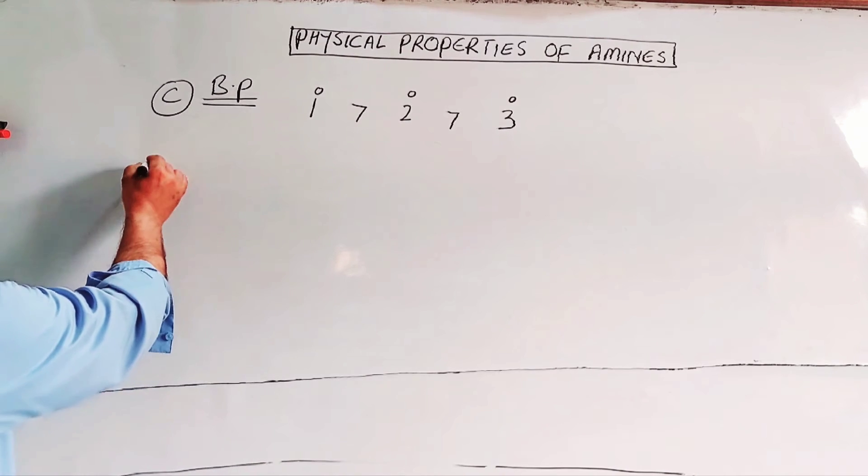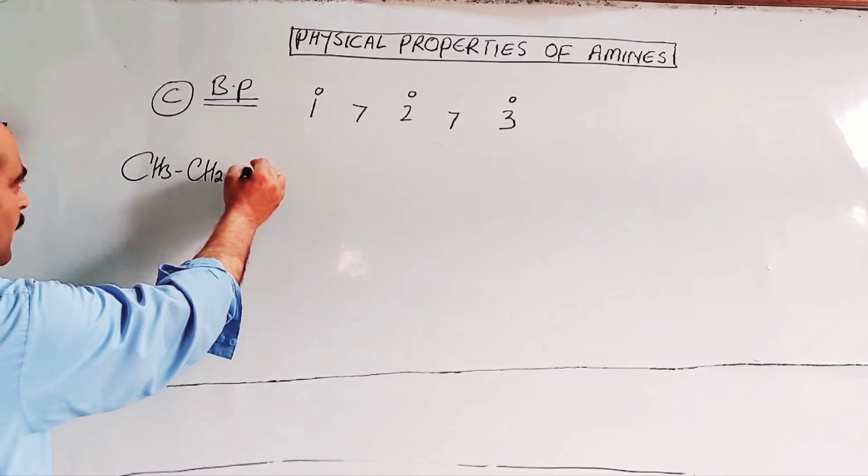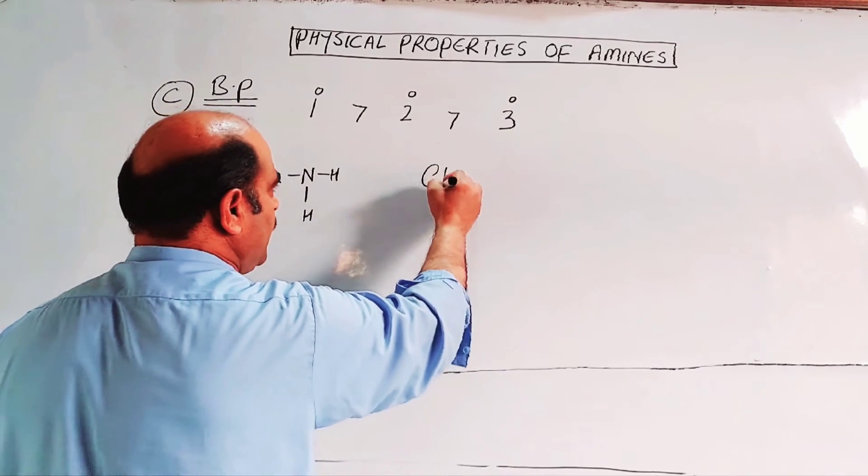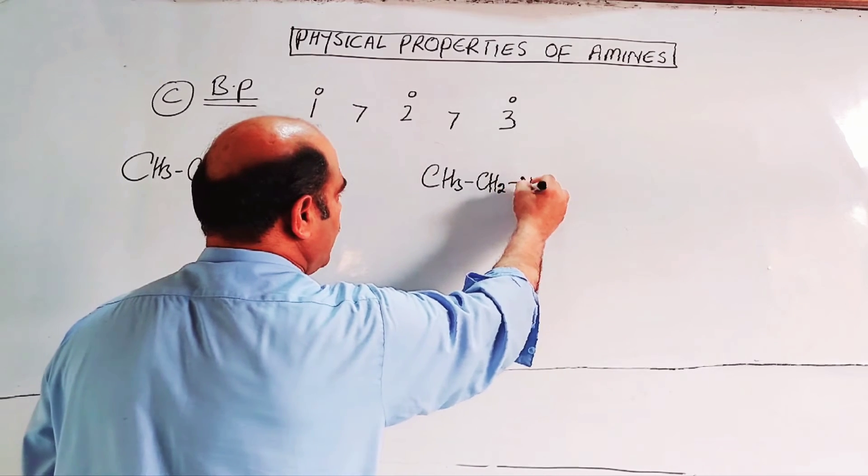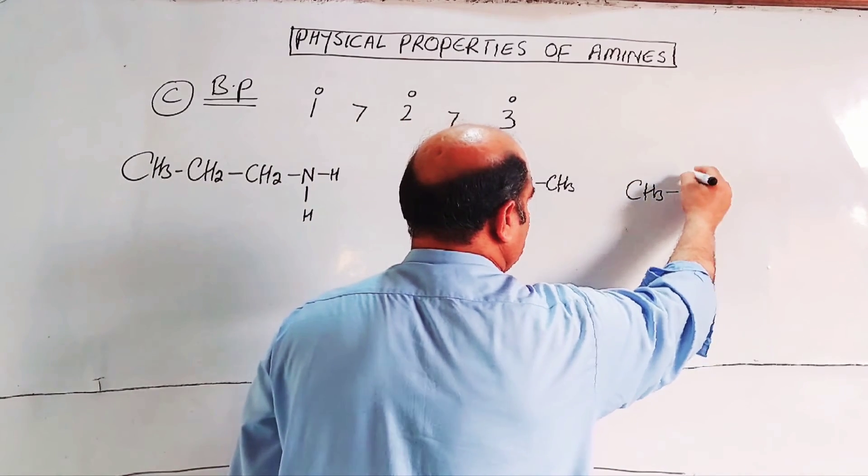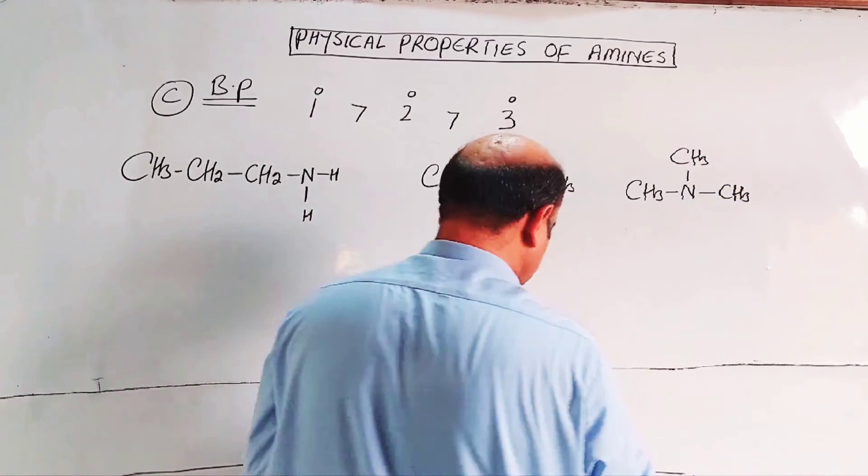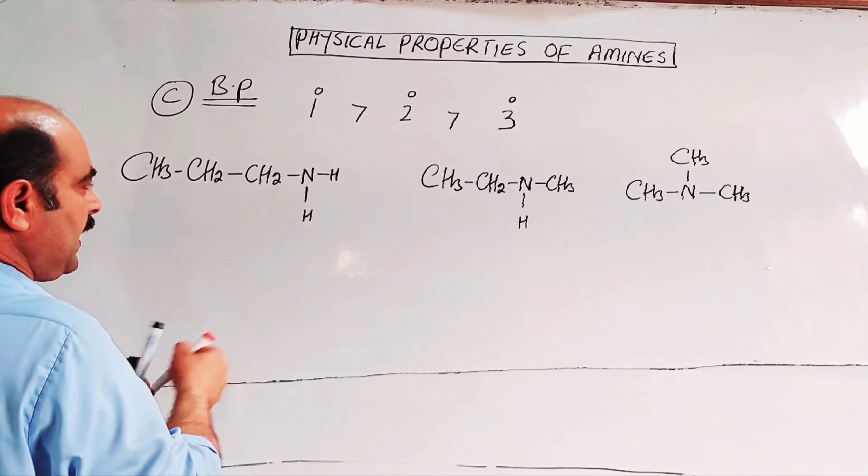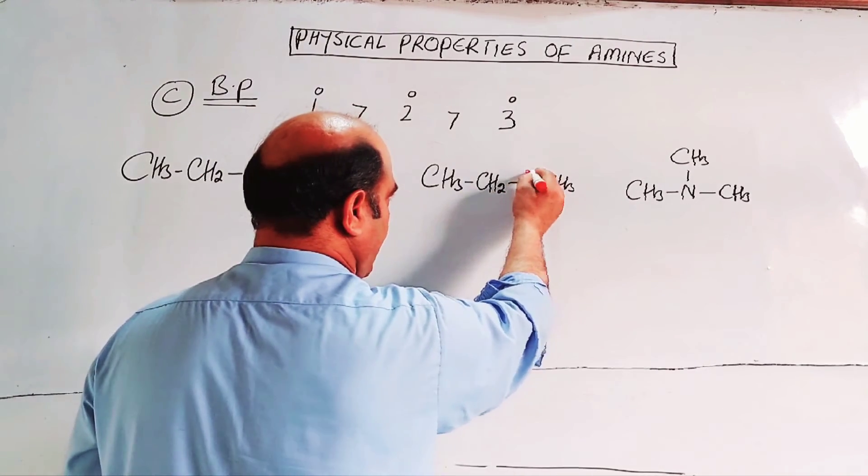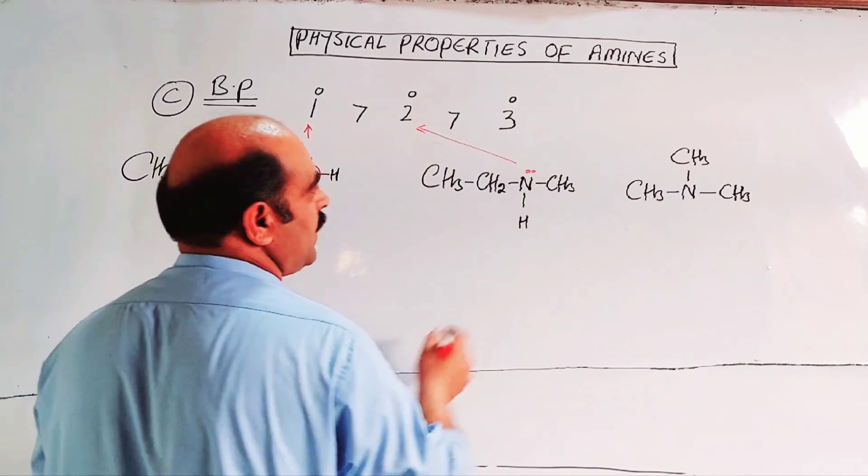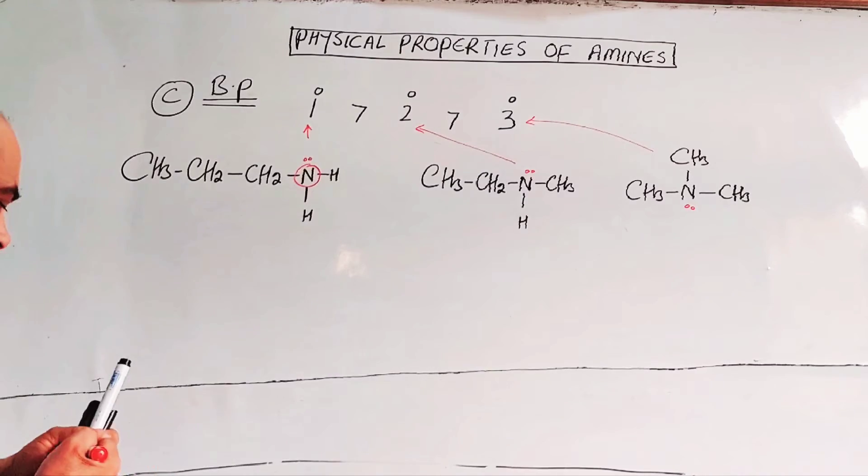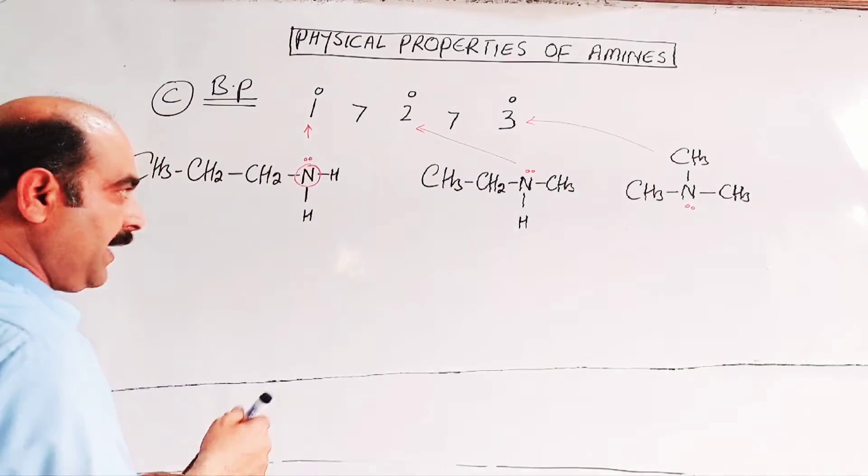The example: CH3-CH2-CH2-NH-NH is primary. CH3-CH2-N-CH3-H is secondary. CH3-N-CH3-CH3 is tertiary. In this case, nitrogen is directly connected to only one carbon, this is one degree amine or primary amine. When nitrogen is directly connected to two carbons, these are secondary amines. When nitrogen is connected to three carbons—one, two, three—these are three degree amines. That's why the boiling point is higher for primary, then secondary, then tertiary. The reason is hydrogen bonding.